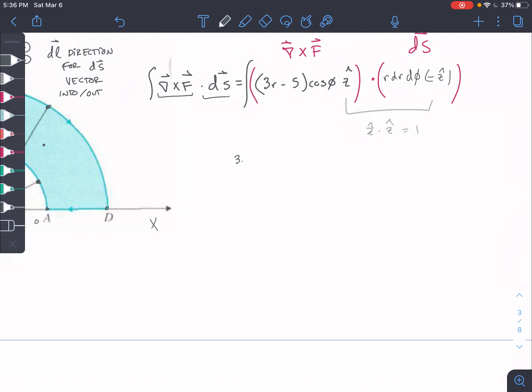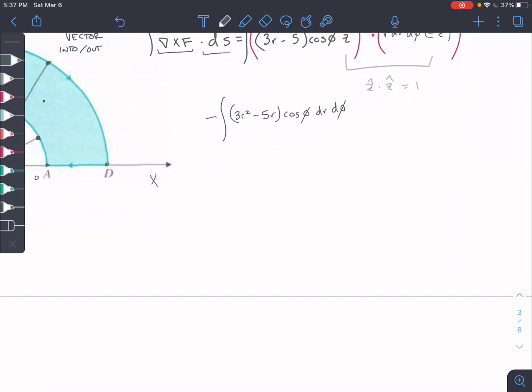Okay, so we're going to distribute this r first, so 3r squared, 5r, cosine of phi, and then we're going to have dr d phi, and we're going to take our negative sign outside here. Actually, I'm going to distribute that negative so it doesn't come back to bite us later. So we're going to have 5r minus 3, oh, I'll do it this way. Maybe it's a little less confusing if I don't swap them around. 3r squared minus 5r times cosine phi dr d phi.